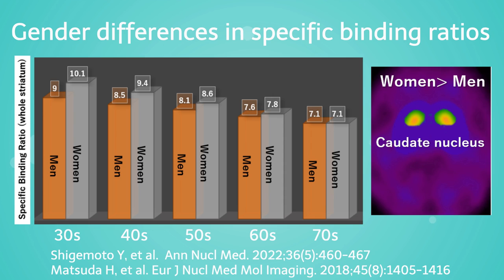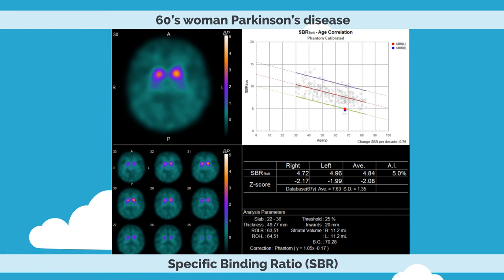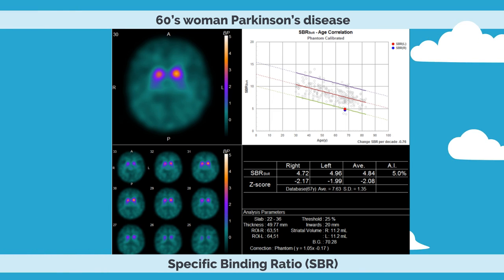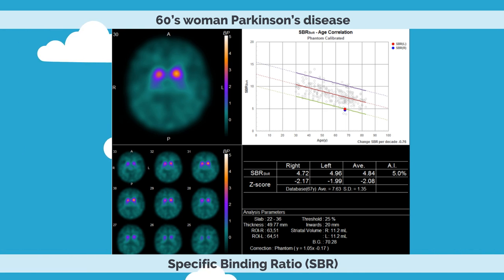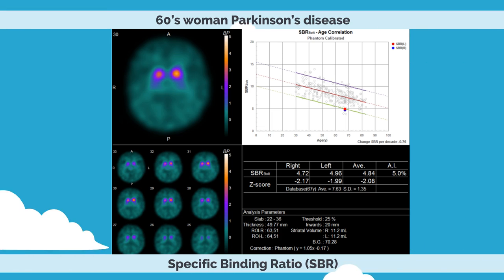Oestrogen hormones are believed to be responsible for this gender difference, as women have been reported to show higher specific accumulation in the striatum, especially in the caudate nucleus, than men. Therefore, gender differences must also be taken into account. In Japan, a database of DAT scan specific binding ratios from a large number of healthy subjects across a wide age range has been established, enabling accurate diagnosis through comparison.